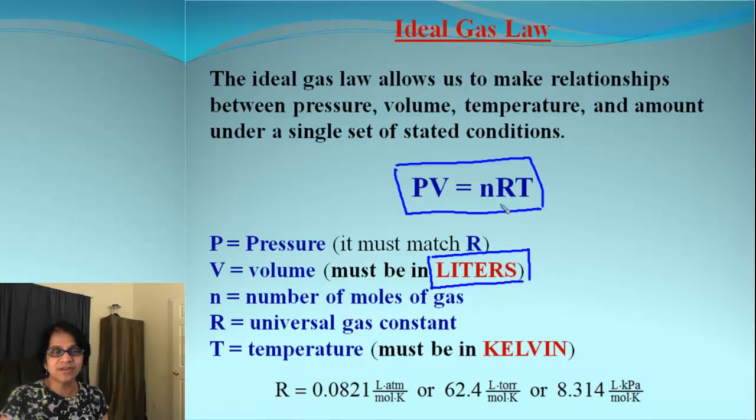N is number of moles. R is gas constant. But look again. The values of R are all these different values. How do you know which value to select?